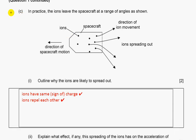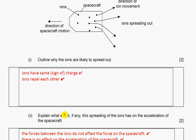In practice, the ions leave the spacecraft at a range of angles as shown. Outline why the ions are likely to spread out: they have the same sign of charge and they repel each other.